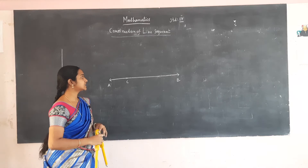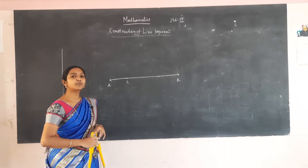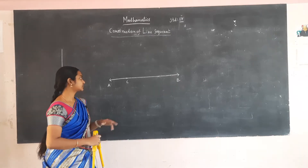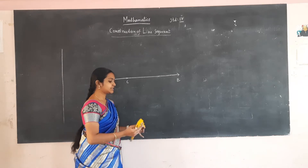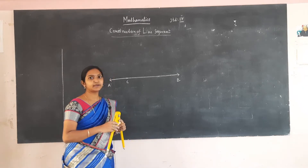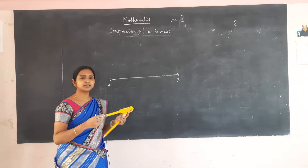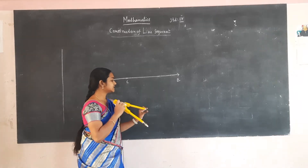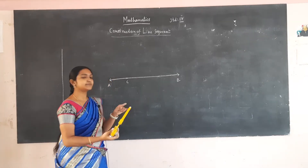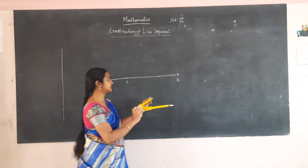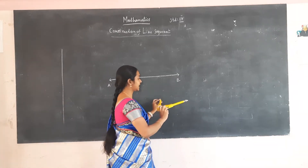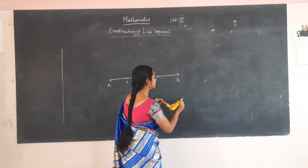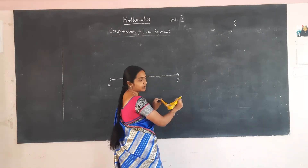We are going to construct a line segment of 4.2 cm. First, take your compass and insert your pencil within it, and now place this tip upon C on your scale. You have to move until you reach 4.2.